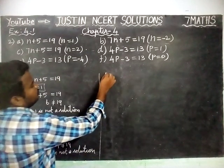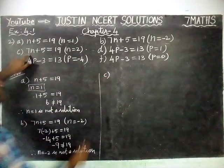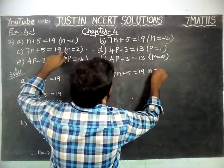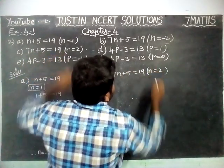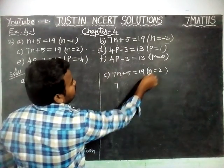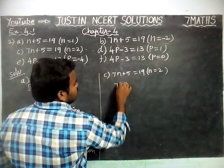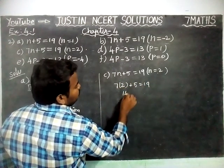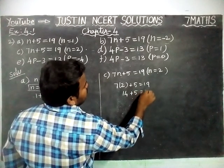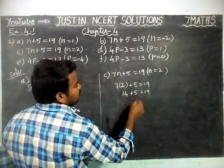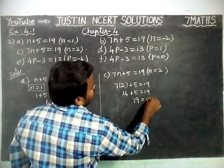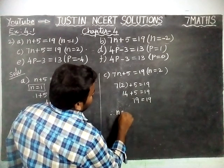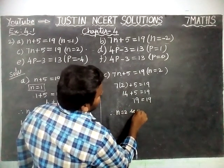Next, we are going to solve option C: 7N plus 5 is equal to 19, where N is equal to 2. Substituting: 7 into 2 plus 5 is equal to 19. 7 twos are 14, plus 5 — both are positive, so we add: 19 is equal to 19. Left hand side is equal to right hand side. Therefore, N equal to 2 is a solution.